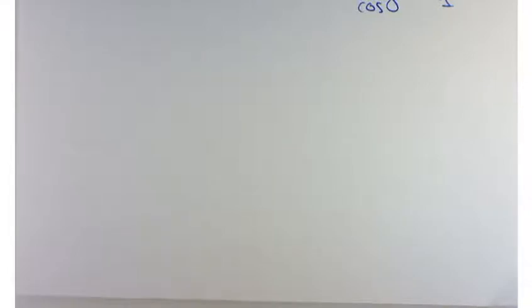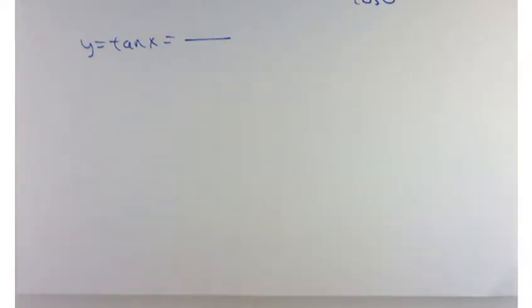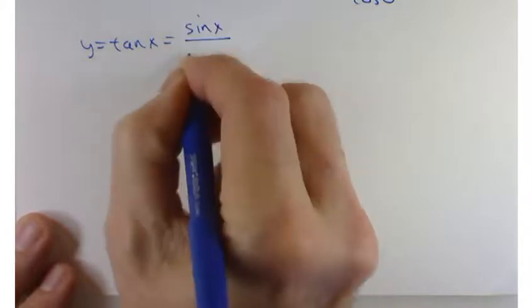So we're going to continue working with the graphs of some of our trigonometric functions. We're going to next work on the graph of the tangent of x. Now, to understand the graph of the tangent of x, realize that the tangent is the sine of x over the cosine of x.